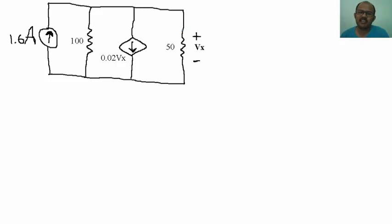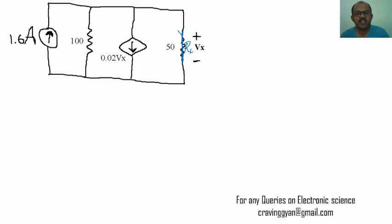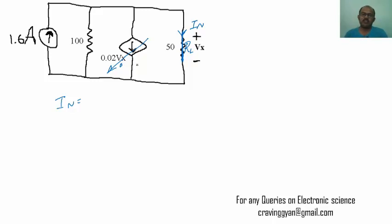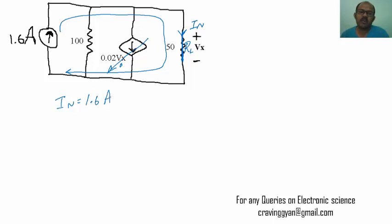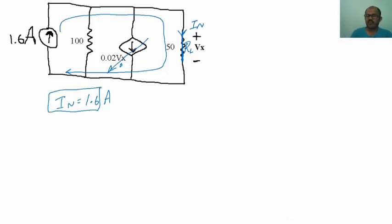The load impedance RL is removed and replaced with a short circuit; the current through it is Norton's current. With the short circuit applied, the voltage across the dependent source 0.02 × VX becomes zero, so the entire 1.6 amperes flows through that path. Therefore Norton's current IN = 1.6 amperes.